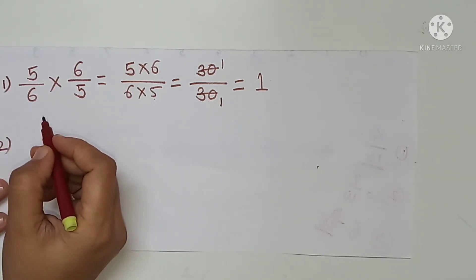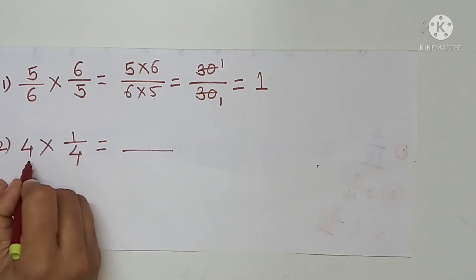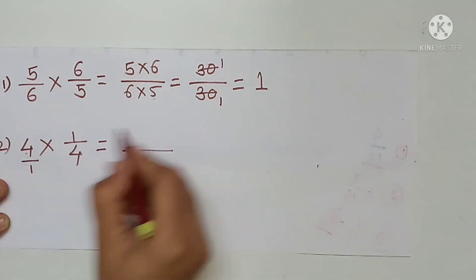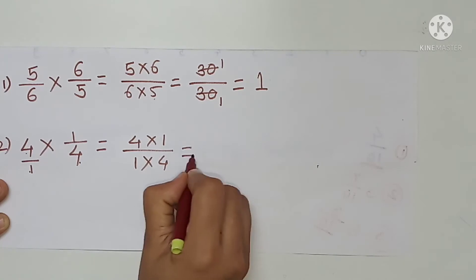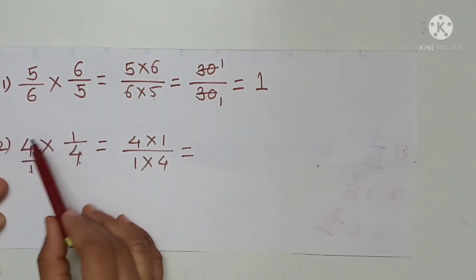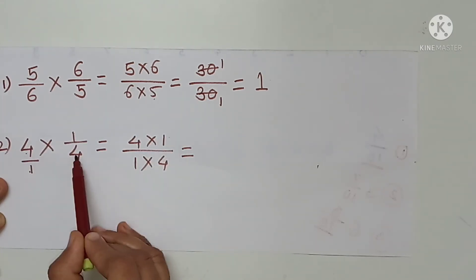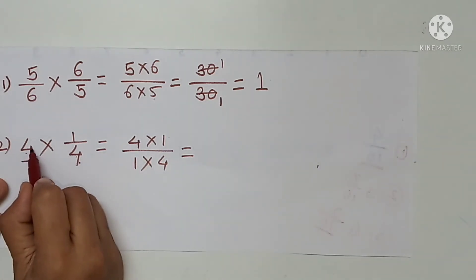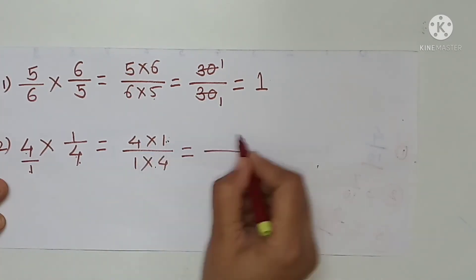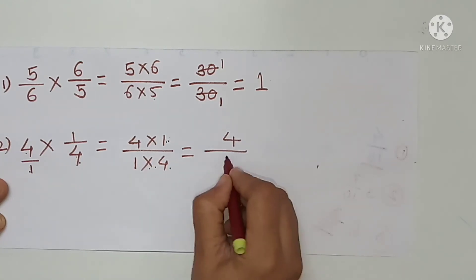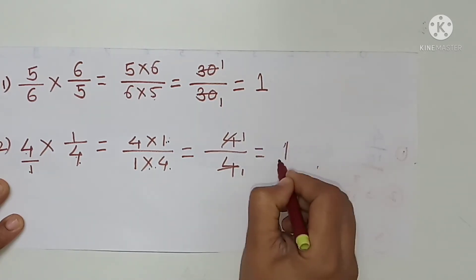Second example: 4 multiplied by 1 upon 4. The denominator of 4 is 1, so we get 4 multiplied by 1 in the numerator and 1 multiplied by 4 in the denominator, which gives 4 upon 4. The multiplication gives 1.